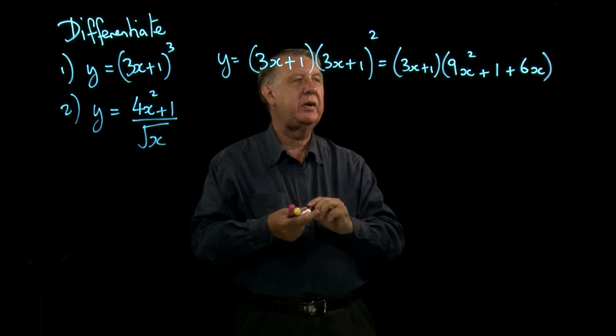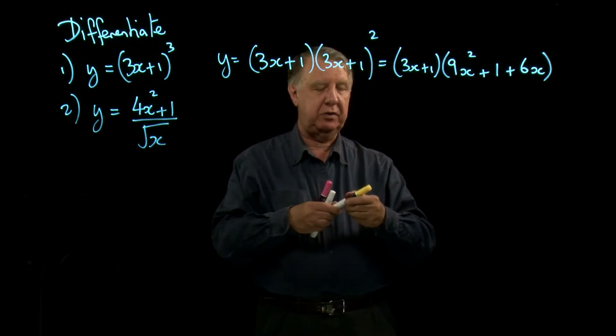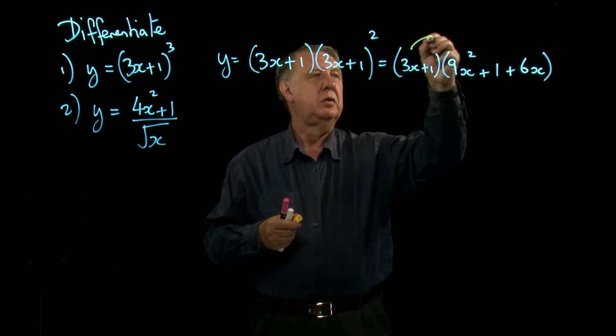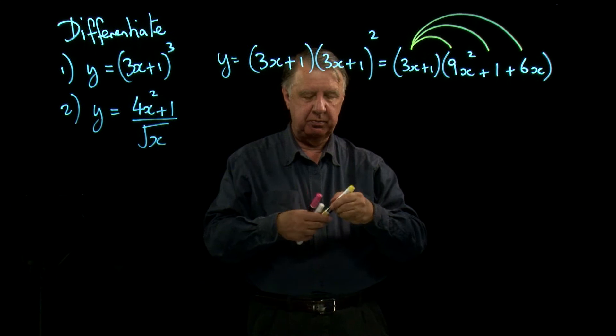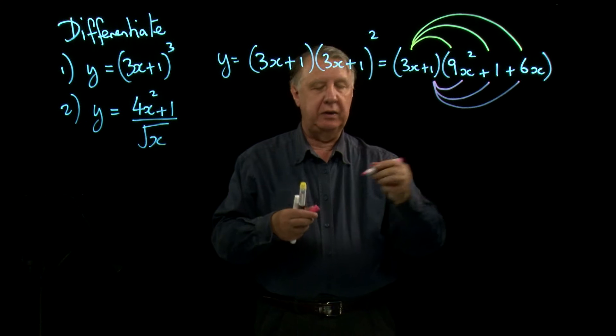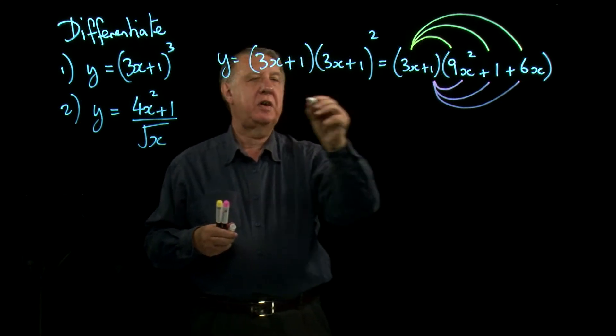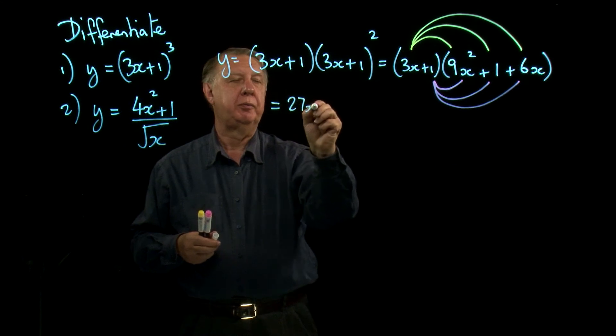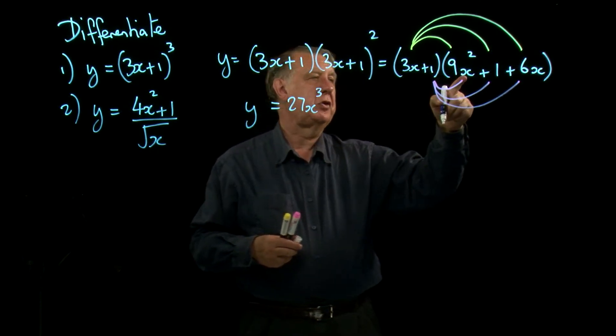An example now here we have of expanding polynomials. Don't forget, we have to do all of that and all of that. Which will give us 27x cubed. Let's try and be clever, how many x squared will we have?